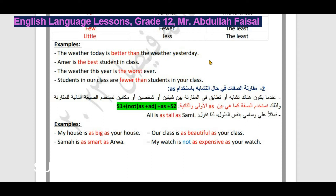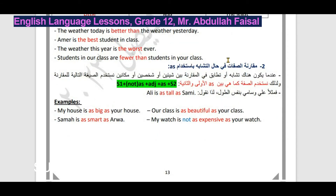ننتقل إلى القاعدة الثانية: مقارنة الصفات في حالة التشابه. عندما يكون هناك تطابق أو تشابه بين شيئين أو شخصين نستخدم as...as والصفة في الوسط. في حالة النفي نضيف كلمة not قبل الـ as الأولى وليس بعدها. مثلاً: Ali is as tall as Sami - علي وسامي بنفس الطول.